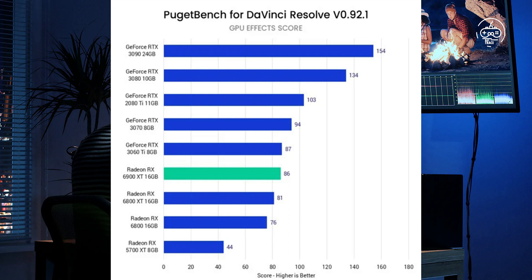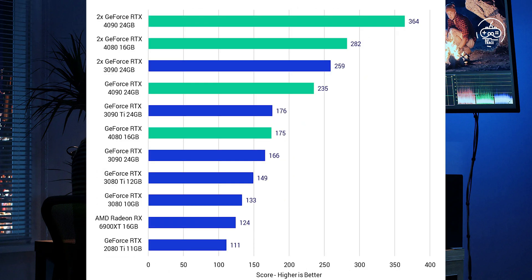For 4K footage with QHD timeline, a GPU with 8 to 11GB of VRAM. Examples: RTX 2080 Ti, RTX 3080. For 4K+ footage with 4K timeline, one or multiple GPUs with 16 to 24GB of VRAM. Examples: RTX 4090 or Quadro RTX 6000.